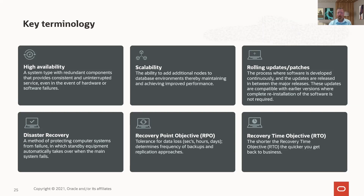Downtime and data loss are measured in Recovery Point Objective (RPO) and Recovery Time Objective (RTO). RPO measures data loss — how much data have I lost permanently? A lot of you can't afford to lose any. RTO is a measurement of downtime — how long does it take before the application is back up and running, and the business is back up and running? RPO and RTO are very important terminology for deciding what approach to utilize.